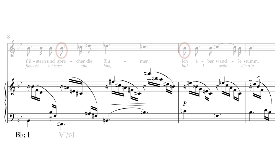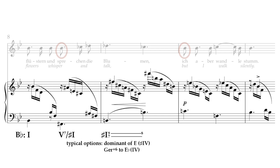We start on I before moving to V7 of sharp I, but instead of B major it's another dominant sonority, implying that we're either about to go to E major — a tritone away from our home key of Bb — or it'll get reinterpreted as some kind of German augmented sixth, and we'll end up in Eb, which would be IV of the home key. Turns out we're in for an even weirder resolution, because Schumann takes us up a half-step to another V7, which then takes us back around the circle of fifths to Bb major by the end of the phrase.